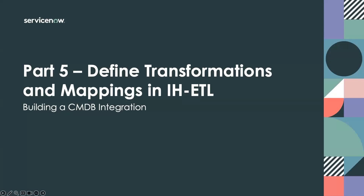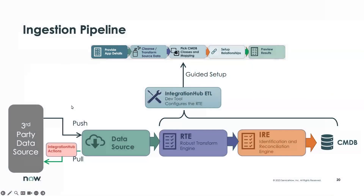Hello, and welcome to part five of building a CMDB integration. My name is Nick Ryan, and today we are going to get into the business of actually starting to use the Integration Hub ETL and building out our actual mappings from our staging data sources into the CMDB. In part four, we actually created our integration hub actions to query the Kong Gateway, then used data sources with custom scripts to call those integration hub actions, and parsed apart some data to be used within our ETL processes.